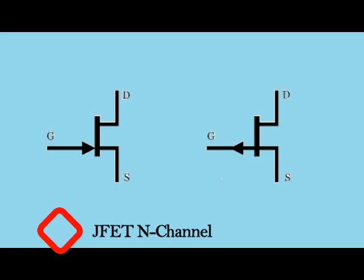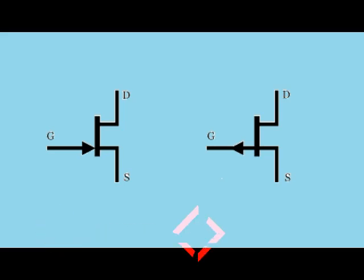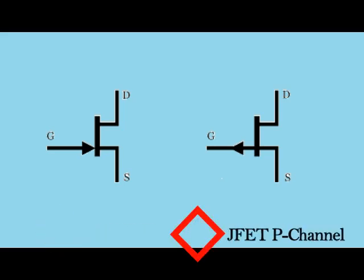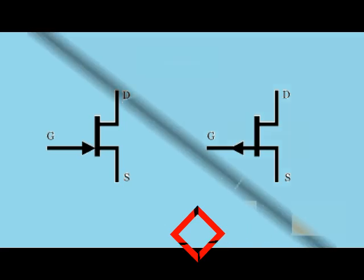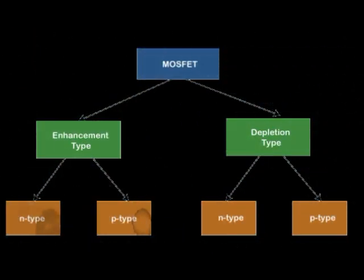JFETs are divided into two categories: JFET N-channel and JFET P-channel. MOSFETs are classified into two categories: depletion mode and enhancement mode.